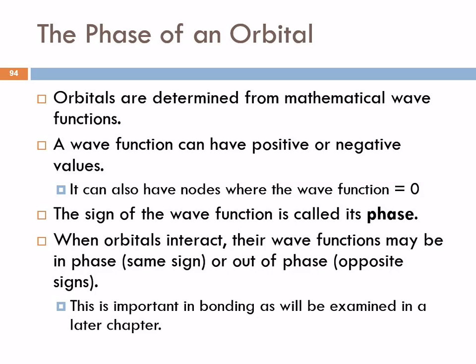So when they interact, they can constructively or destructively interfere. A node is a place where the probability of the electron being there is essentially zero. We don't see diffraction with electrons within an atom — when we shoot electrons through a slit is when we see diffraction, just like with light. And this idea of these wave functions interacting in phase and out of phase has a lot to do with bonding between atoms.